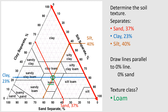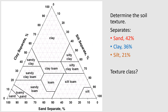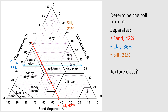Let's find another soil texture class. If we have 42% sand, 36% clay, and 21% silt: first we find 42% sand and draw the line; then we find 36% clay and draw that line — they intersect in the clay loam category. We then find the silt line and draw it through, and all three lines intersect in the clay loam category. So our texture class is clay loam — meaning it has a little more clay than a loam does, but less clay than a clay texture.